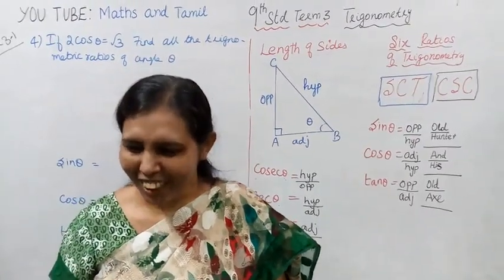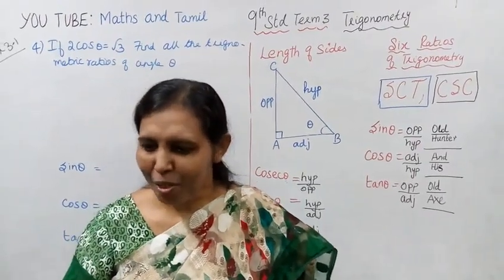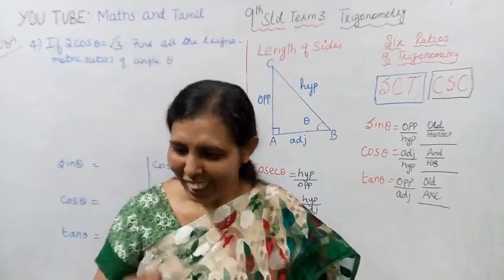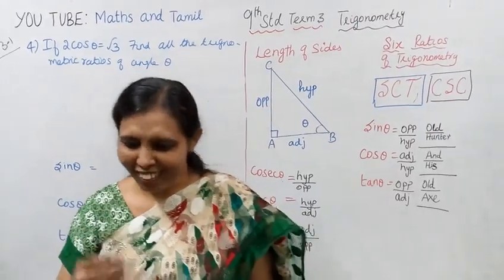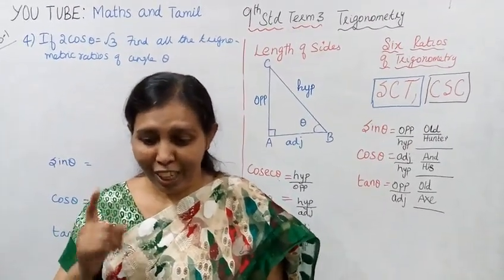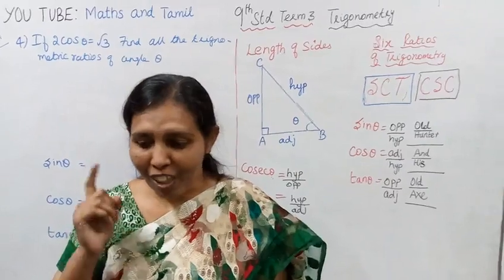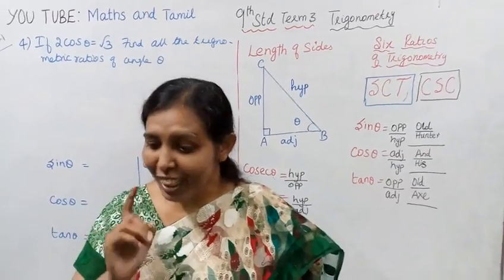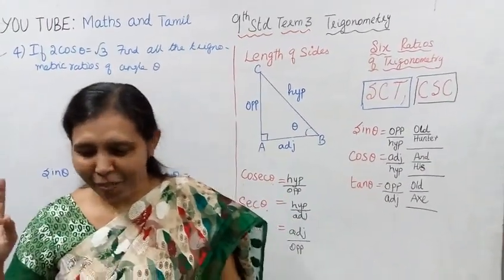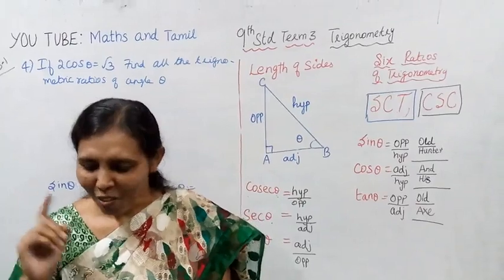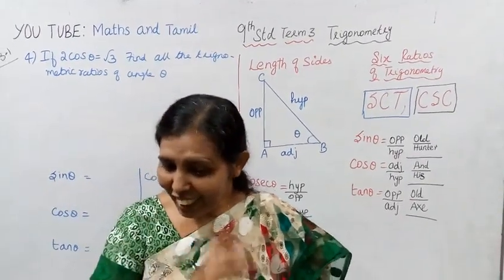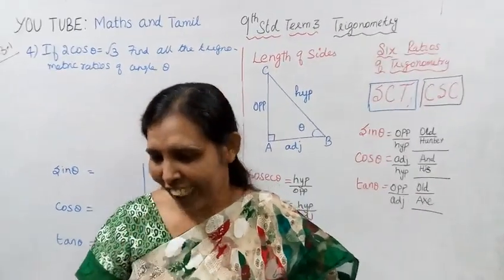Hello 9th standard students. Welcome to Max and Tamil channel. Trigonometry — remember the mnemonic: old hunter and his old axe. The ratio is the same as you can see — old hunter and his old axe.